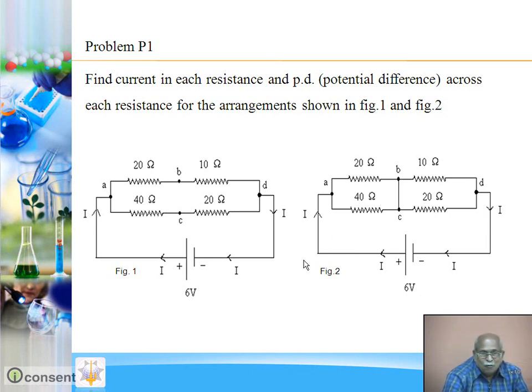After solving these problems, what we come to understand is that currents and voltages in the two figures are exactly identical. So what can we say? In Figure 1, B and C are at same potential, so these two points can be joined. That gives Figure 2. After we join B and C, we get Figure 2. So if we join points B and C, there is no change in current, no change in potential difference anywhere in the circuit.